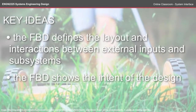To sum up a few key ideas: the functional block diagram defines the layout and interactions between the external inputs and the subsystems within your system boundary, and the functional block diagram shows the intent of the design.